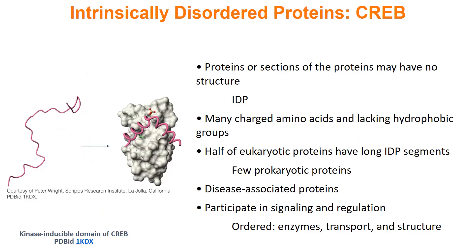The next topic is intrinsically disordered proteins, or IDPs. Up to this point, I've talked about structured proteins with defined 3D shapes. However, a good percentage of proteins don't have any set structure — they're like wet spaghetti noodles that constantly change. This is called an intrinsically disordered protein. The image on the left shows an IDP that actually gains structure when it binds its target, forming a helix.